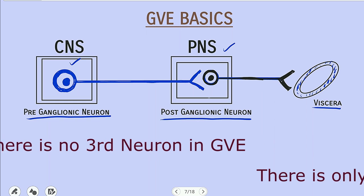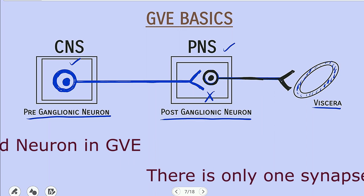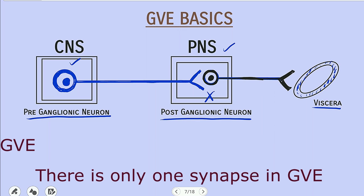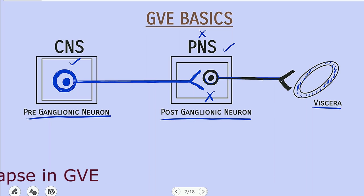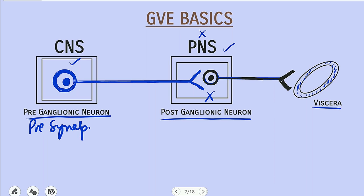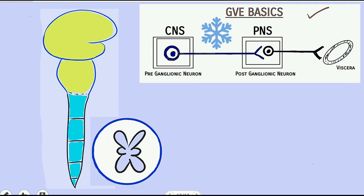We have only one synapse between the two neurons, and this synapse is present in the peripheral nervous system. This synapse is known as the ganglia. Before the synapse we have the pre-ganglionic or pre-synaptic neuron, and after the synapse we have the post-ganglionic or post-synaptic neuron. This is the crucial diagram showing the basic composition of the neurons that form the general visceral efferent component.